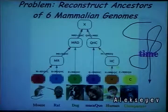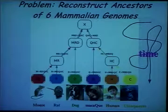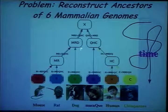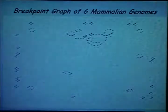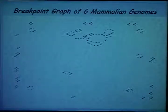We addressed a particular project reconstructing the ancestor of six mammalian genomes: mouse, rat, dog, macaque, human, and chimpanzee. Please note that this tree is not correlated with time — it just gives the topology. This is the real breakpoint graph of six mammalian genomes, where pink vertices correspond to X chromosomes. The graph is not random; it is very well structured, showing many small cycles and long chains of vertices, giving hope that we can actually solve this problem.